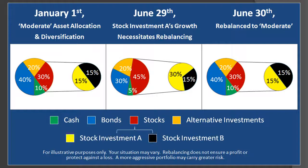It's crucial to go in twice per year and reset both your asset allocation and your diversification. Here we can see that because of the tremendous growth in stock investment A from January to June, the asset allocation and diversification of the stock category are significantly off target. This jeopardizes the intended risk of the portfolio, and so, to correct this, the portfolio needs to be rebalanced to its intended risk of moderate. In this hypothetical example, by selling stock investment A, we are forcing ourselves to sell high, and with its proceeds, buy low into our other investments. As you have probably heard, when it comes to investing, you want to buy low and sell high — which is exactly what rebalancing forces you to do.